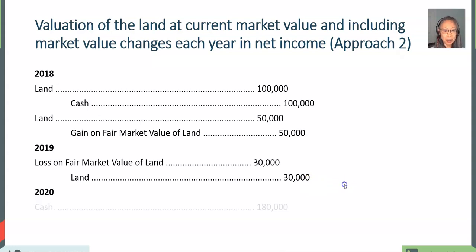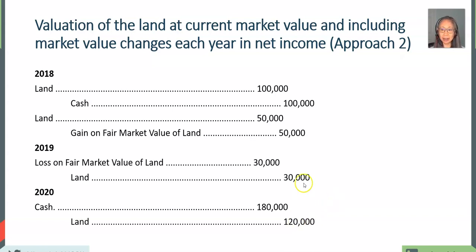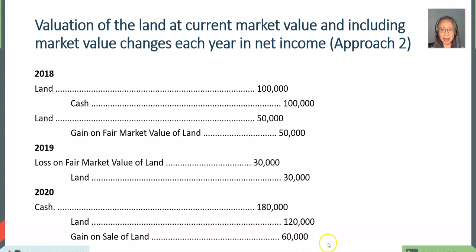When we sell the land, we receive $180,000 in cash. The current market value as recorded in the book was $120,000, so our gain is recognized as $60,000. The amount of gain will change depending on whether or not the value of the land was re-evaluated during the life of the asset held by the firm.